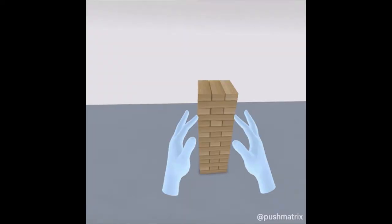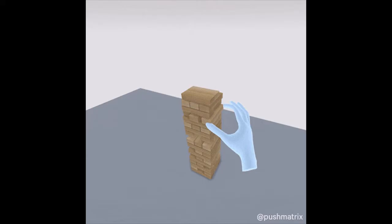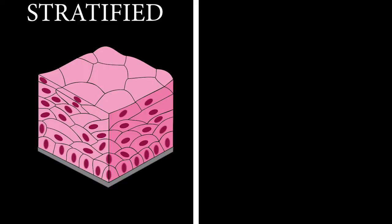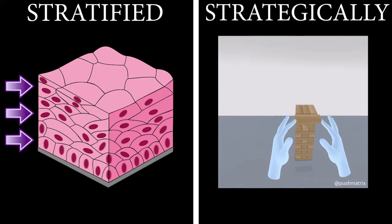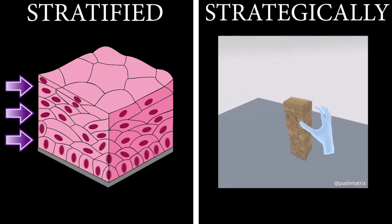To help remember that stratified means multiple, think of the game Jenga. In Jenga, you have to strategically place blocks on top of each other to build a tower — stratified, multiple layers. Strategically place blocks to build multiple layers. Pretty easy, right? Now it's your turn.